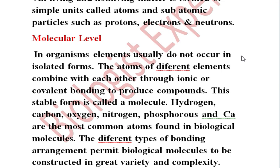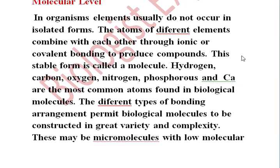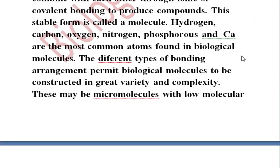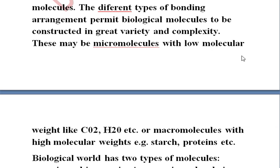The most common elements found in biological molecules include carbon, oxygen, and hydrogen. These combine in atoms of different molecules and give them a great variety of complexity. There are two types of molecules: one is a micro-molecule with lower molecular weight, like carbon dioxide and oxygen, and the other is a macromolecule with higher molecular weight, like starch.